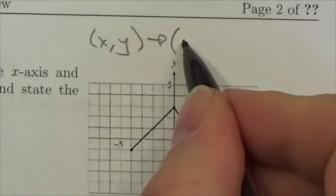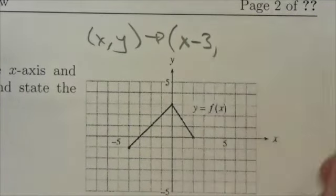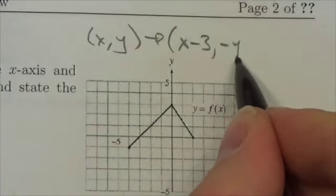And three to the left, visually in the graph, means I'm losing three points from every x coordinate. So this is going to look like this.